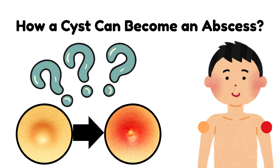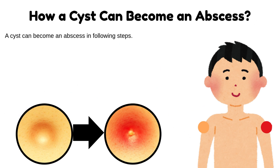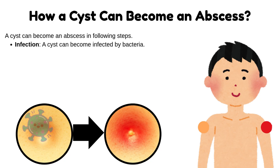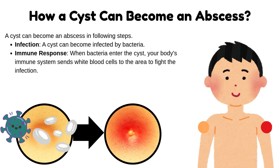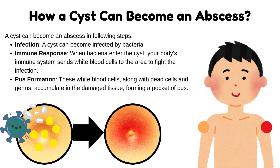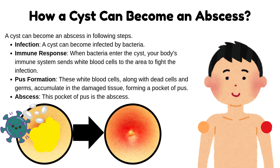How can a cyst become an abscess? A cyst can become an abscess in the following steps. First, infection: a cyst can become infected by bacteria. Second, immune response: when bacteria enter the cyst, your body's immune system sends white blood cells to the area to fight the infection. Third, pus formation: these white blood cells, along with dead cells and germs, accumulate in the damaged tissue, forming a pocket of pus. Finally, abscess: this pocket of pus is the abscess.